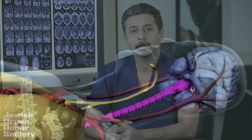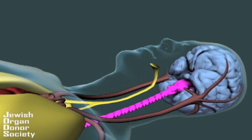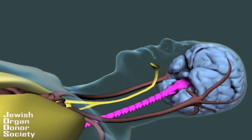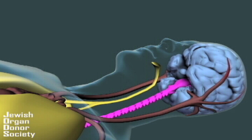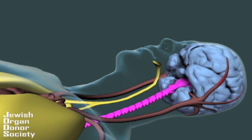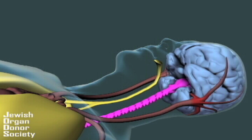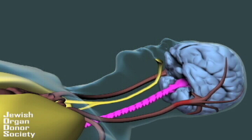How does brain death occur? If a person receives a serious blow to the head or has a major stroke, the brain might begin to swell. Since the skull is made of hard bone, it does not allow the brain to expand. Physicians can try medication or surgery to reduce the swelling, but if this does not succeed, the pressure on the brain can grow greater than the pressure of the beating heart.